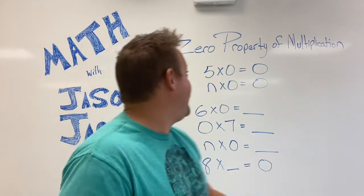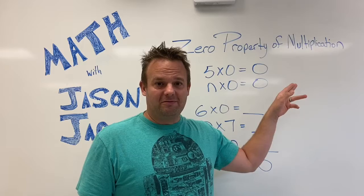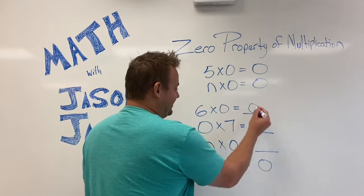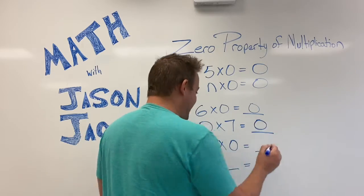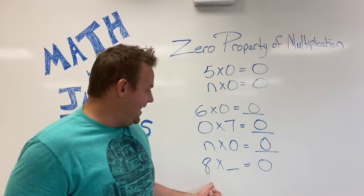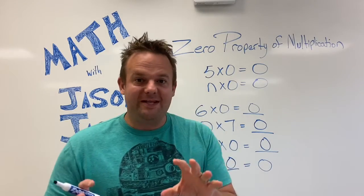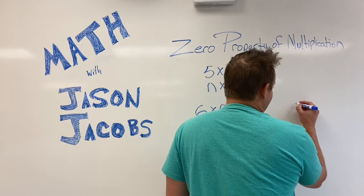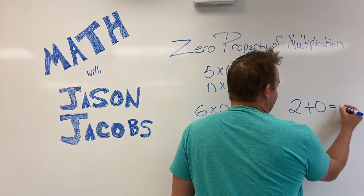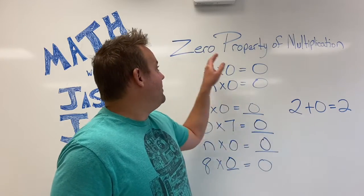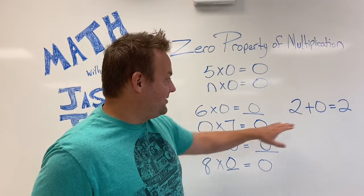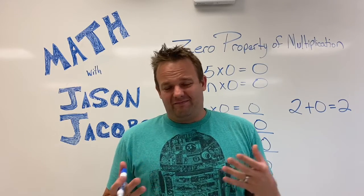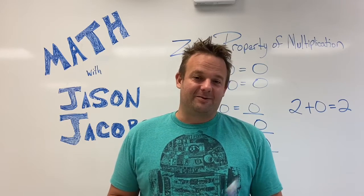Zero Property of Multiplication — that's what you're going to learn today. We have five times zero equals zero. So any number — N times zero is zero. It's just that simple. Six times zero? Zero. Zero times seven? Zero. N times zero? Zero. Eight times what is zero? Zero. Now, don't get it mistaken with the Identity Property of Addition, which says two plus zero equals two. This is the Zero Property of Multiplication — any number times zero equals zero. Some people get confused on that, but not you now.